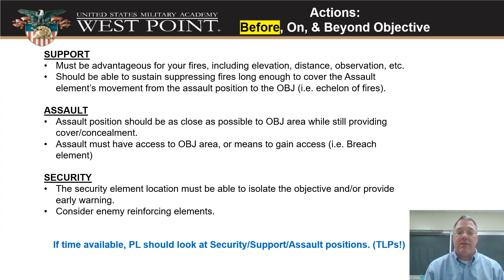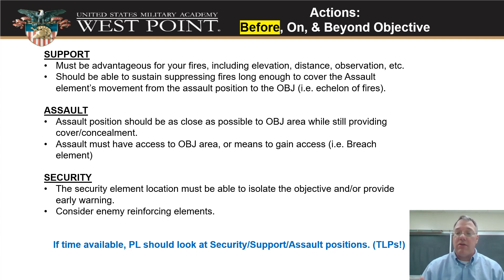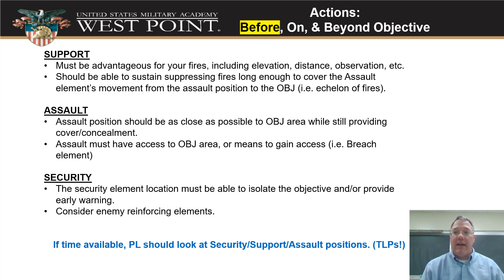Other things to think about before the objective: as long as you have the time, always consider these three kinds of positions — support positions, assault positions, and security positions. For support positions, where are you going to put your support by fire? Where can you put supporting operation elements to make the mission go well? A good support position should have the ability to call indirect fires, with good observation to provide indirect fire support from its location without having to relocate. You don't want a support by fire position where the machine guns are set but nobody can observe the objective clearly to call in fires.